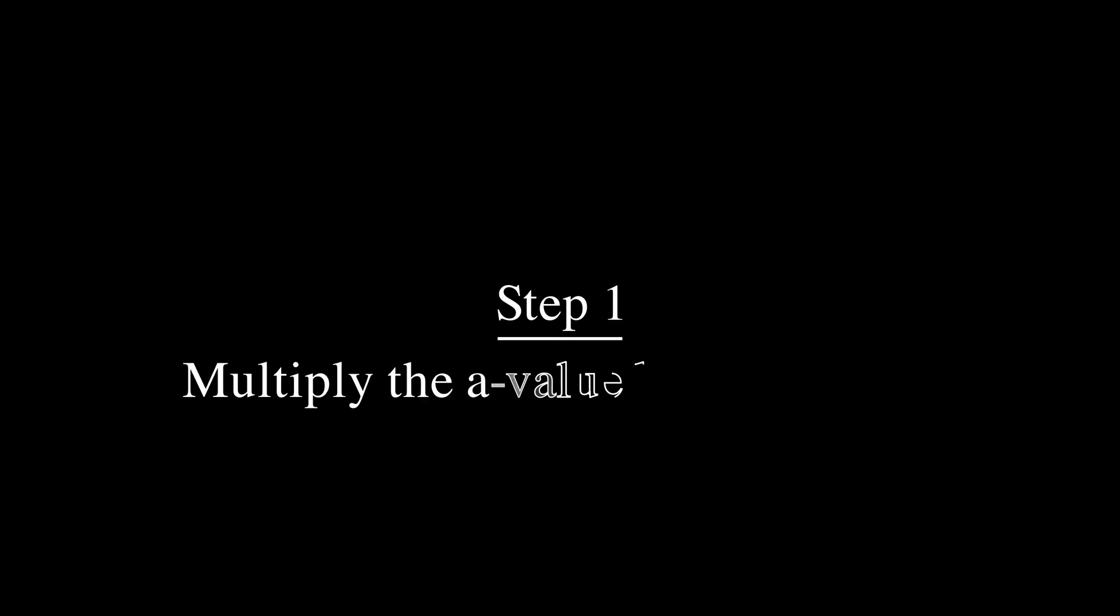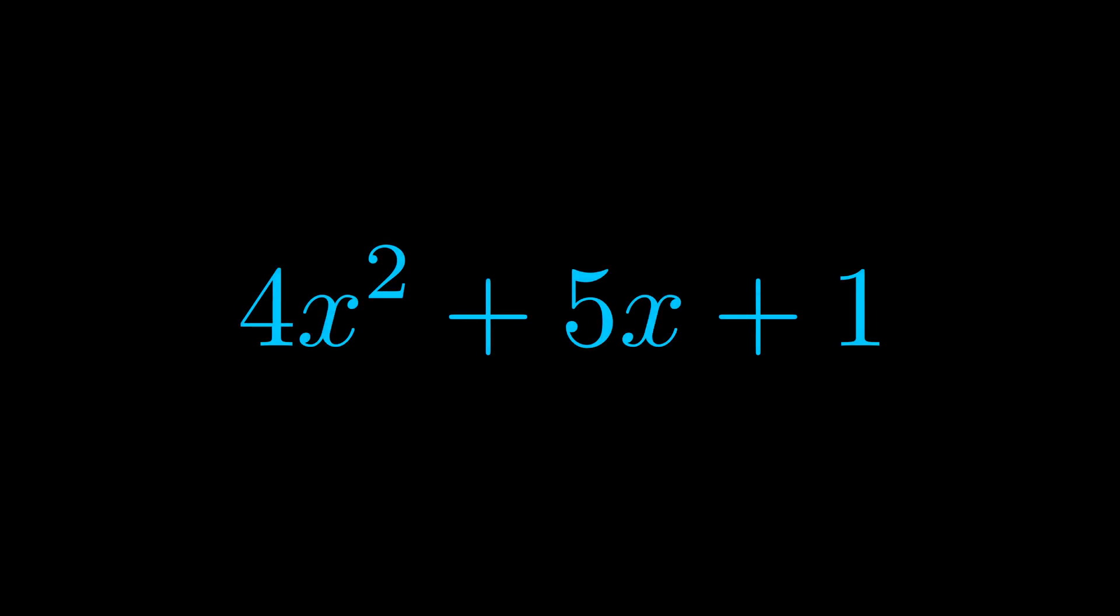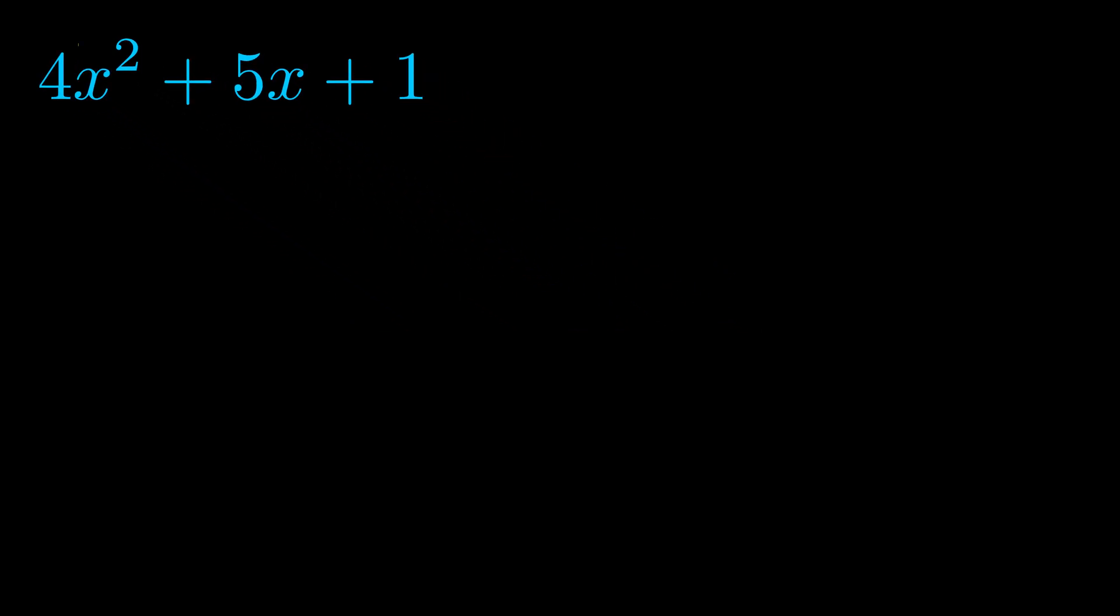Step one when factoring an equation of this form is to multiply the a value by the c value. Here we can see that our a value is the coefficient on the x squared term and our c value is the constant term.